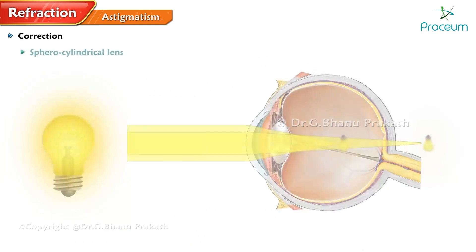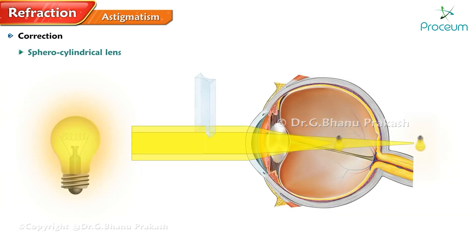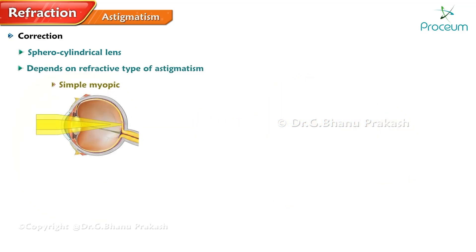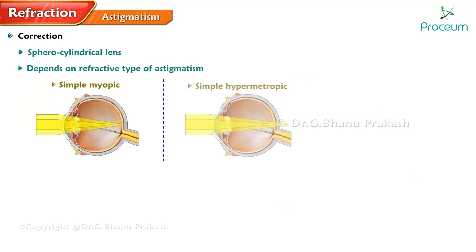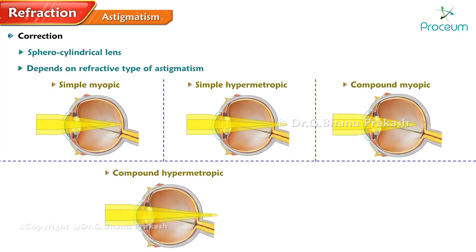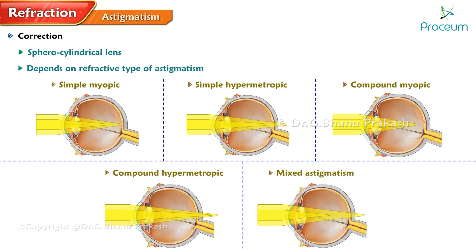Regular astigmatism is corrected using a sphero-cylindrical lens, and the type of correction depends on the refractive type of astigmatism, such as simple myopic, simple hypermetropic, compound myopic, compound hypermetropic, and mixed astigmatism.